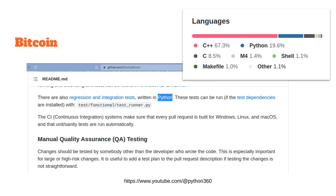You can see the Bitcoin Core repo is written primarily in C++, with Python and Shell and Makefile also present. Python is mainly used for testing — they have numerous tests which they run with Python.